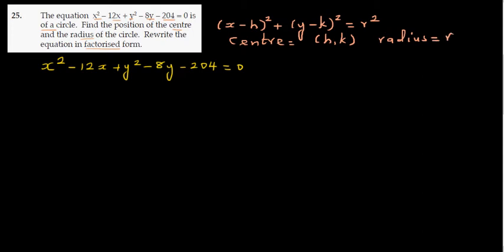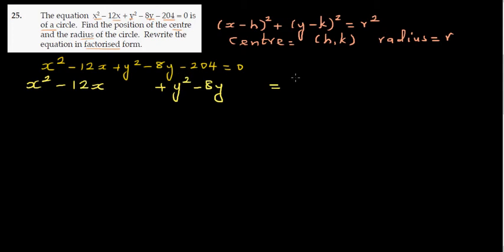We'll use the completing the square method. Write it as x squared minus 12x, leaving a gap, plus y squared minus 8y, leaving a gap, and move 204 to the other side by adding 204 to both sides. For completing the square, take half the coefficient of x and square it, then do the same for the y coefficient.